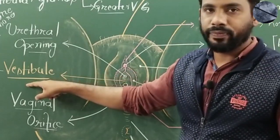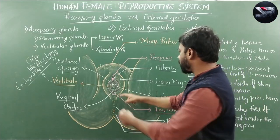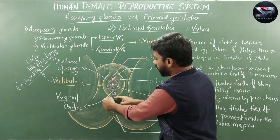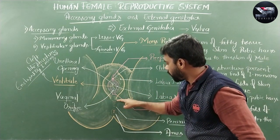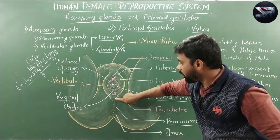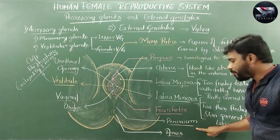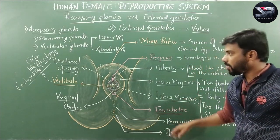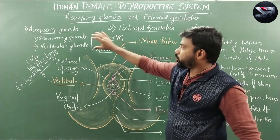The region where both labia majora disappear towards the posterior end — the portion between the anus and where the labia majora end — is called the perineum. Now let us discuss the vestibular glands.